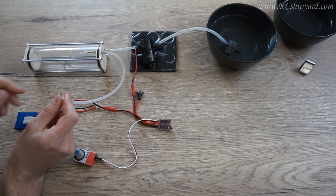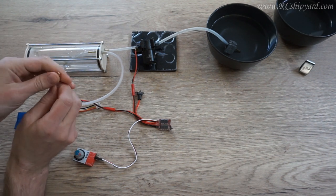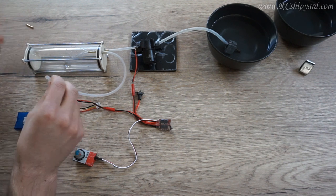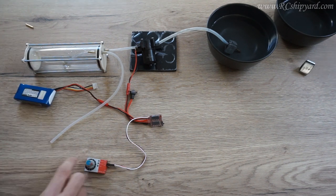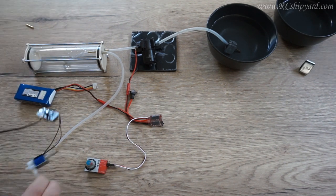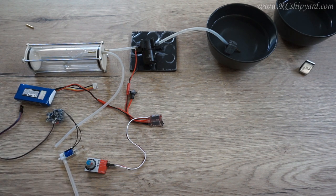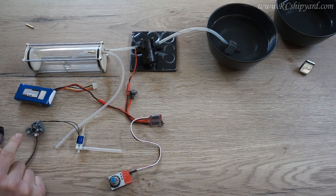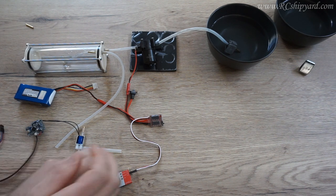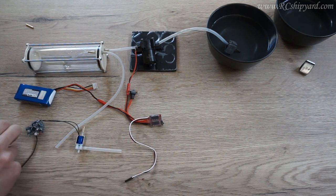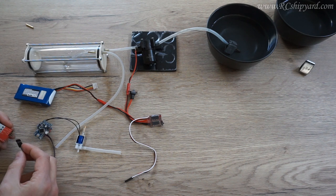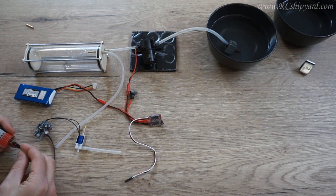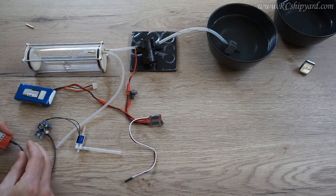So instead of this tube we can use something which is called a solenoid. This solenoid is controlled by an Arduino and you can connect it to your radio receiver. So in our case we will connect it to our servo tester. And first I will show you how it works.